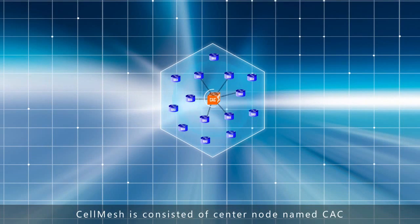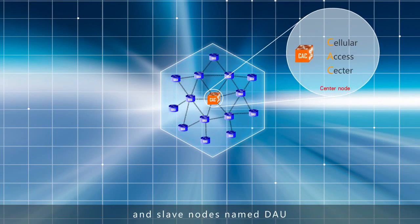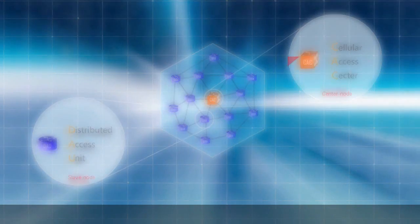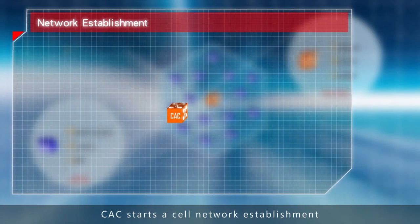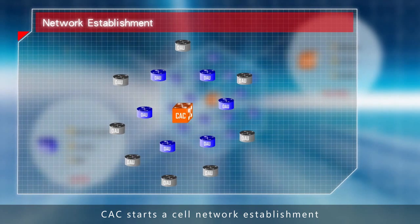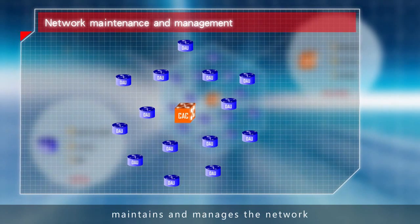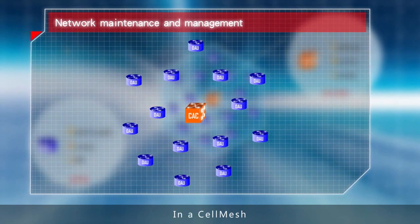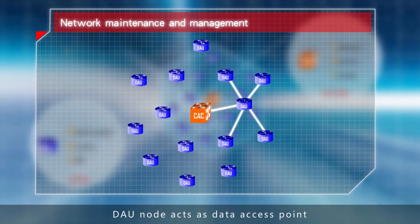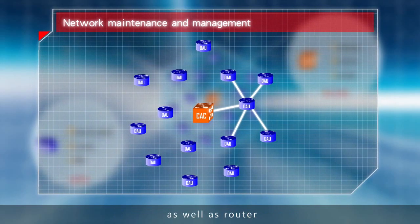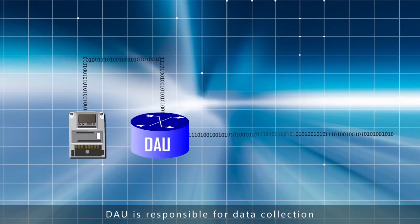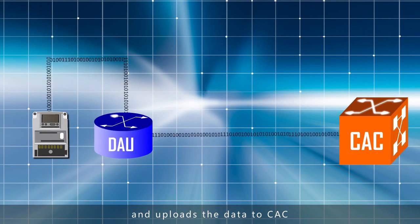CELL MESH consists of a center node named CAC and slave nodes named DAU. CAC starts a cell network establishment, maintains and manages the network. In a CELL MESH, the DAU node acts as a data access point as well as a router. DAU is responsible for data collection and uploads the data to CAC.